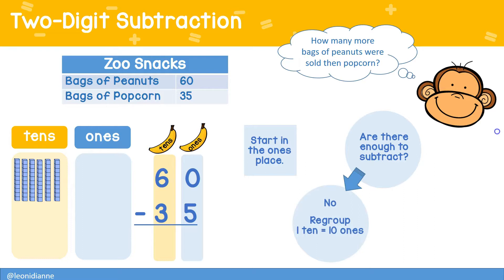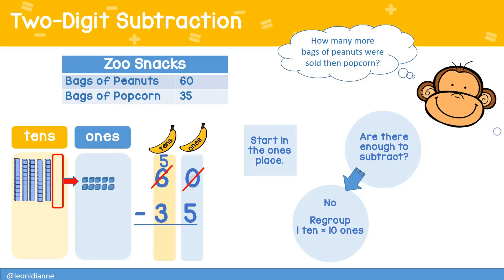We're going to take one of the tens and exchange it for ten ones. Next, we'll record this by decreasing the number of tens from six tens to five tens. We'll also increase the number of ones from zero ones to ten ones.